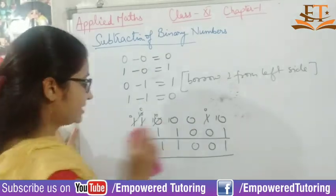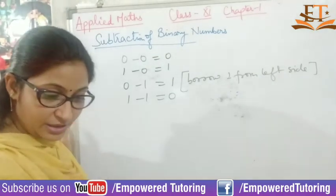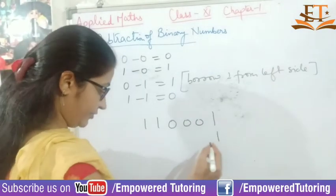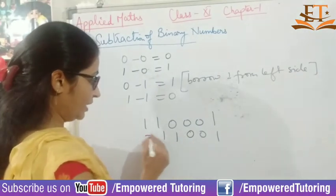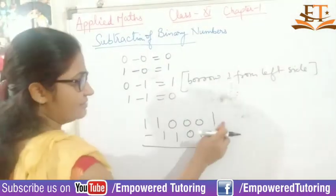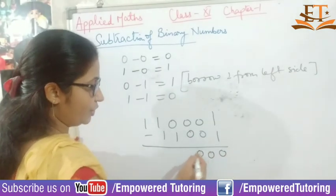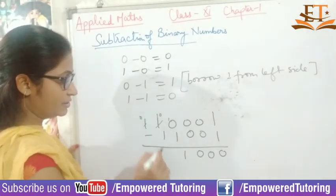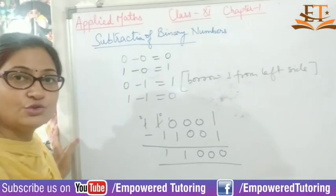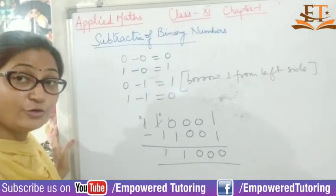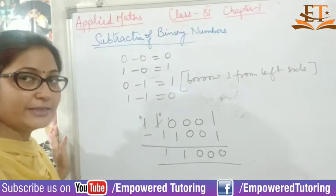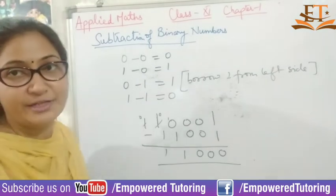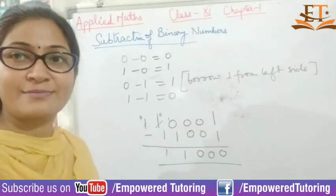You can cross-check your addition or subtraction by converting the binary numbers into their equivalent decimal numbers, subtracting, and checking whether your answer is correct. Let's check one more question: 110001 minus 10011. 1 minus 1 is 0; 0 minus 0 is 0; 0 minus 0 is 0; with borrowing, 2 minus 1 gives 1; again 0 gives result; so the answer is obtained. This is how you solve subtractions. If you feel any doubt, feel free to ask in the comment box. See you in the next video with multiplications and divisions of binary numbers. Stay tuned with Empower Tutoring.